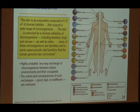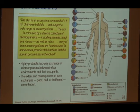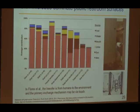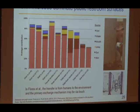The skin is an ecosystem composed of 1.8 square meters of diverse habitats that support a wide range of microorganisms—bacteria, fungi, viruses, and mites—many of which are harmless and in some cases provide vital functions the human genome has not evolved. It's highly probable that there's a two-way exchange of biological material between us and the spaces we inhabit, though the extent and consequences—good, bad, or indifferent—we don't yet know. Gene sequencing of public restroom surfaces finds lots of evidence of human skin bacteria, though it's not clear whether this is an airborne or simply a physical contact role.